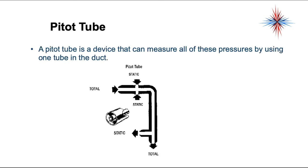The pitot tube is a device that can measure all of these pressures using one tube in the ductwork. It's basically a double-wall tool — connecting two spots on the outside gives you static pressure and total pressure. Velocity pressure is calculated by subtracting static pressure from total pressure. You take those two measurements, subtract them, and you get velocity pressure, which is the pressure of the air feed in the duct.